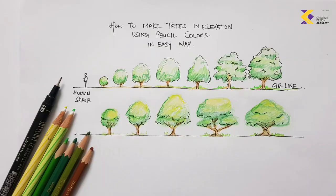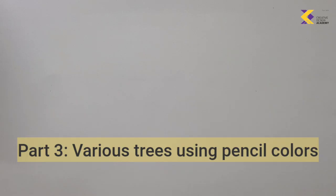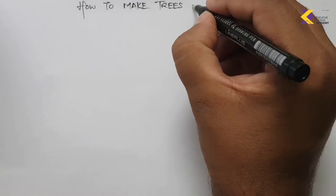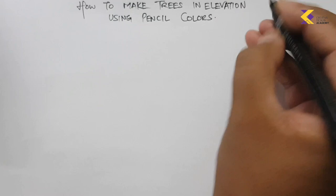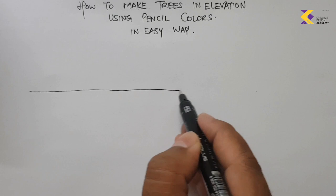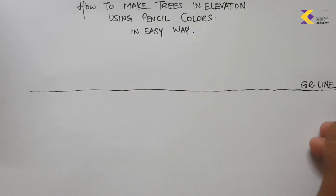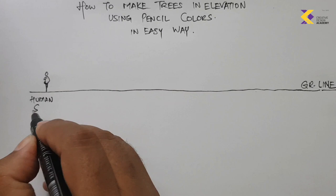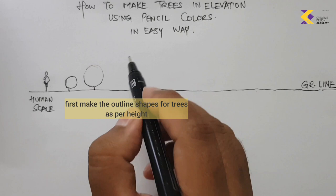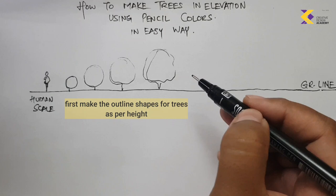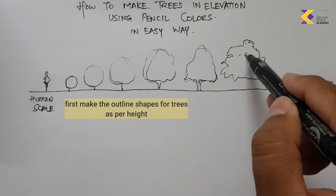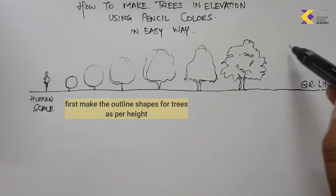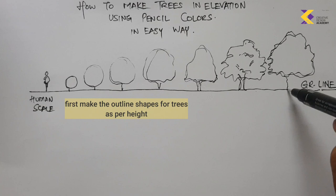Moving on to the next chapter: drawing various trees using colors — specifically pencil colors. We start with the same basic technique: make the ground line and draw basic shapes and profiles. We also draw a human figure for context and to establish the relative height. The outline circular shapes are drawn first, slowly increasing in height, with the foliage profile getting larger, before we start using pencil color to shade them.